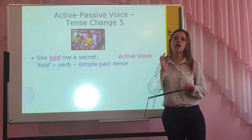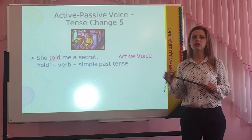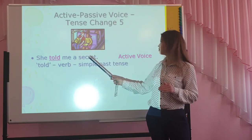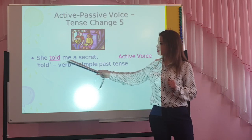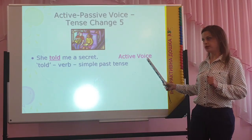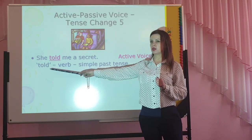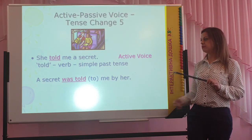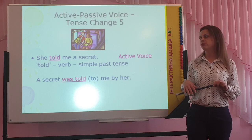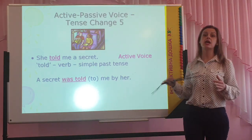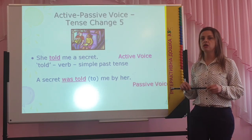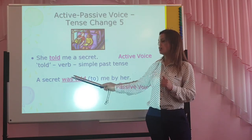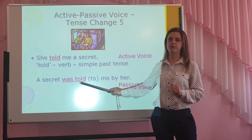The next part of our lesson is past simple passive. We have the sentence: she told me a secret. This sentence is in the active voice — we use the verb 'told' in the past simple tense. But if we transform this sentence into the passive form, we have: a secret was told to me by her. Here we use the helping verb 'was' and the third form of the verb 'told'.